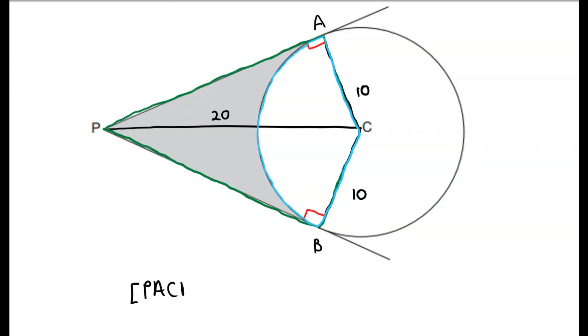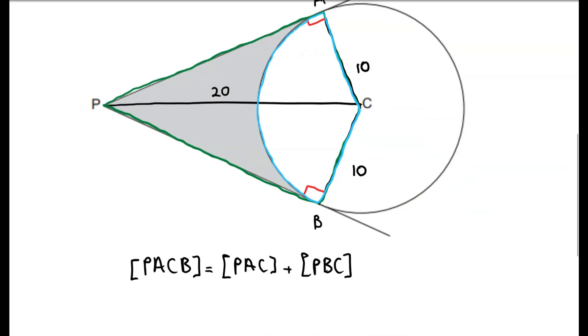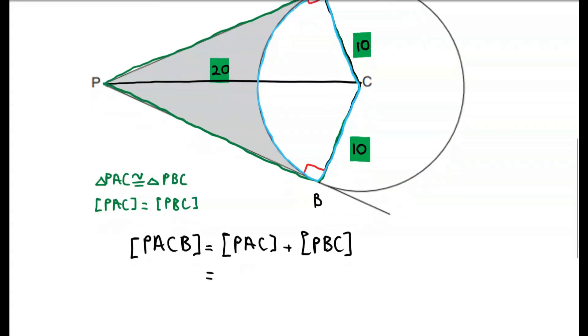So we'll start with the area of the quadrilateral. The area of quadrilateral PACB is equal to the area of triangles PAC plus triangle PBC. And from the diagram, triangles PAC and triangle PBC are both right angle triangles. And since they have the same length of one of their legs and hypotenuse, they must be congruent by hypotenuse leg congruency. So the area of triangle PAC is equal to the area of triangle PBC. This means that we can simplify our expression for the area of quadrilateral PACB as just 2 times the area of triangle PBC.